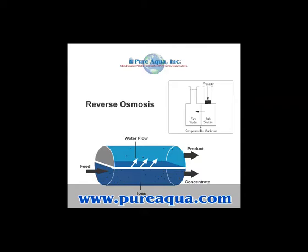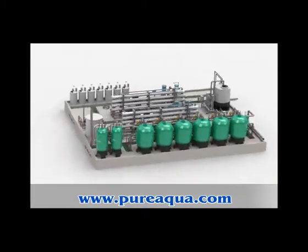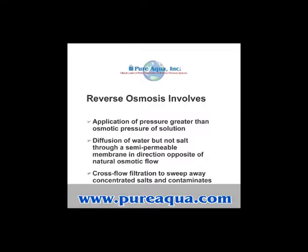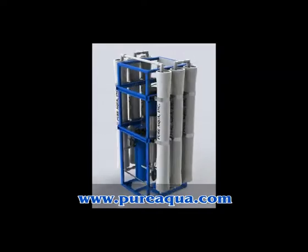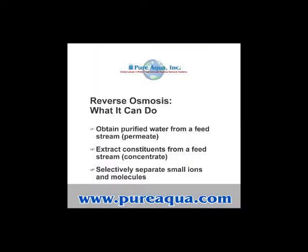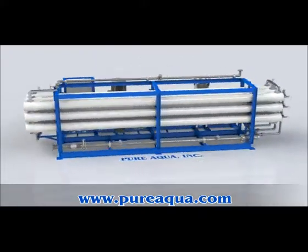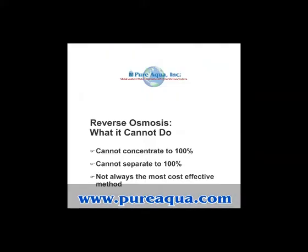For the reverse osmosis process to be effective, a pump must apply sufficient pressure to significantly overcome the osmotic pressure present. The reverse osmosis process, as we know it today, was invented in the 1960s with the development of membranes that could be used to desalt water.